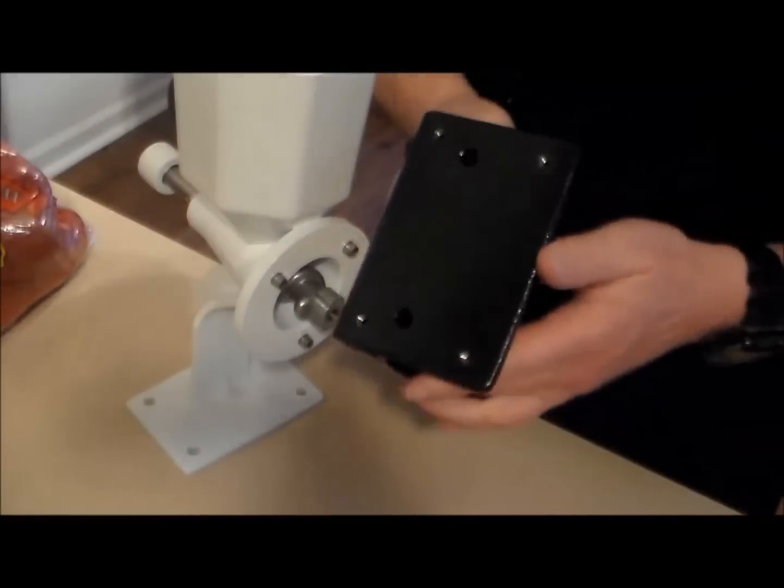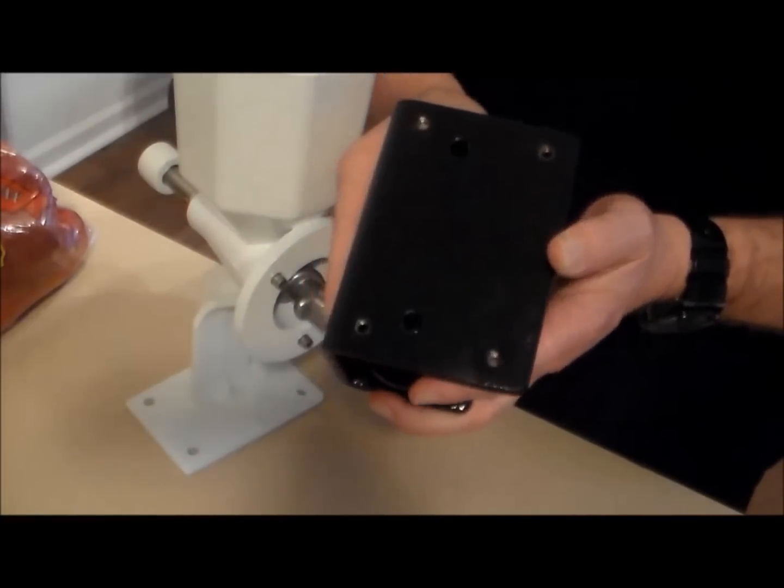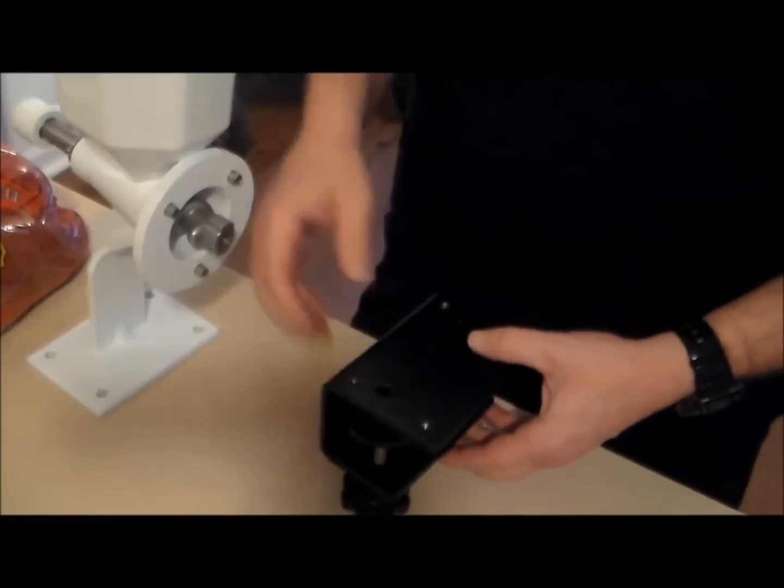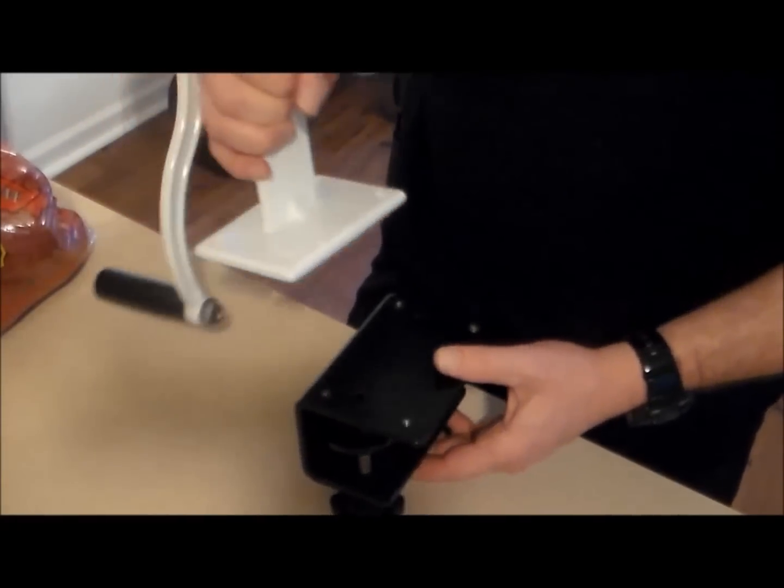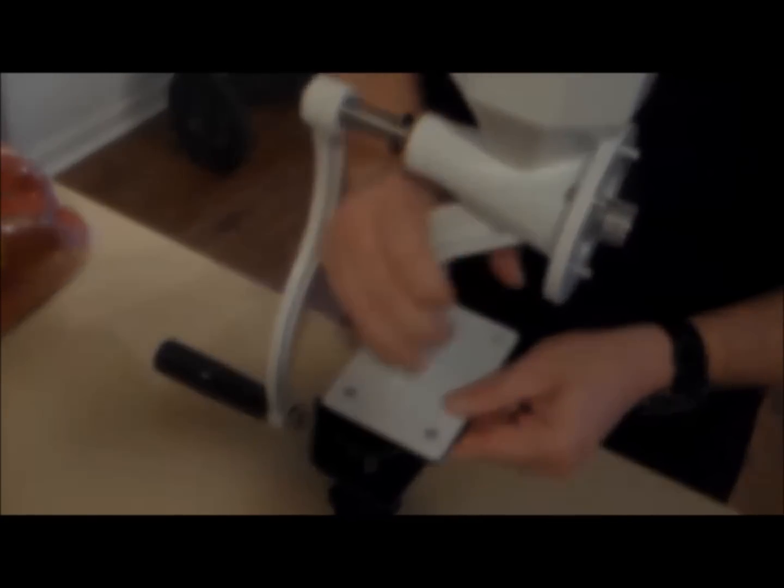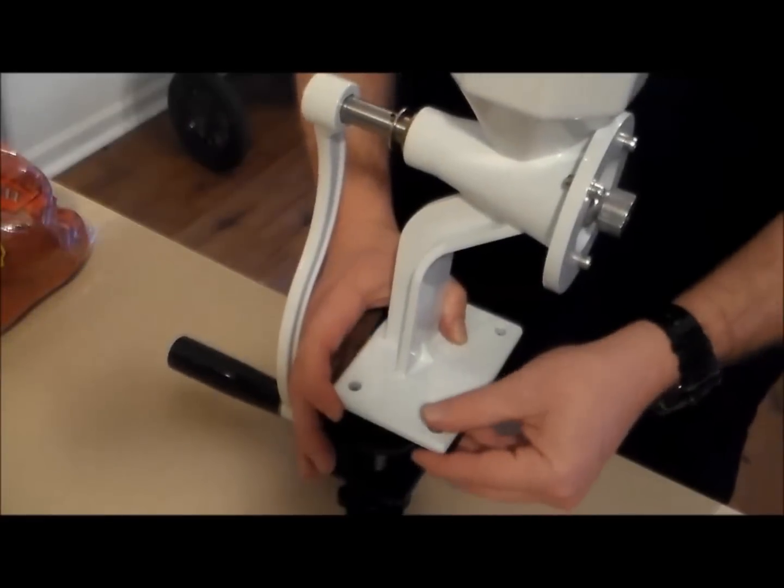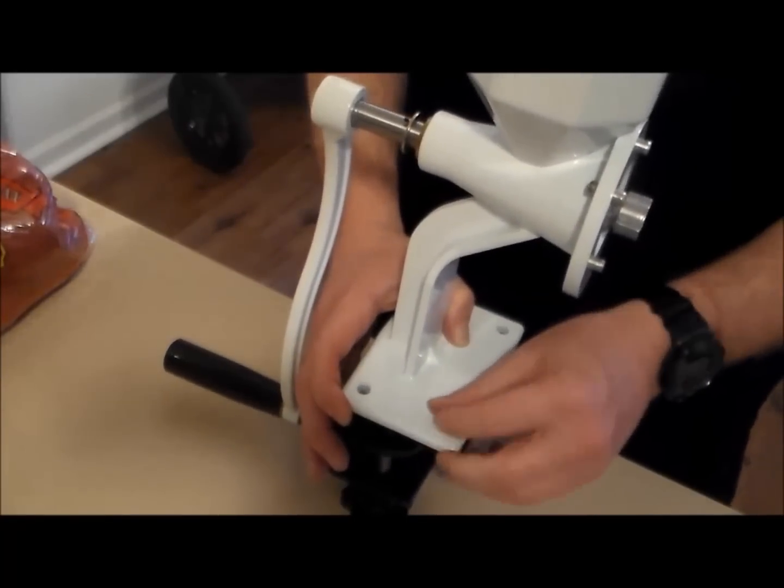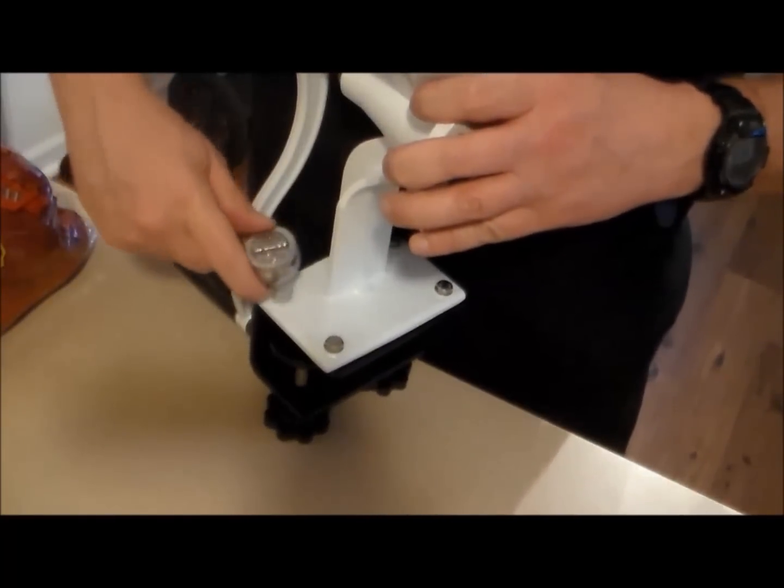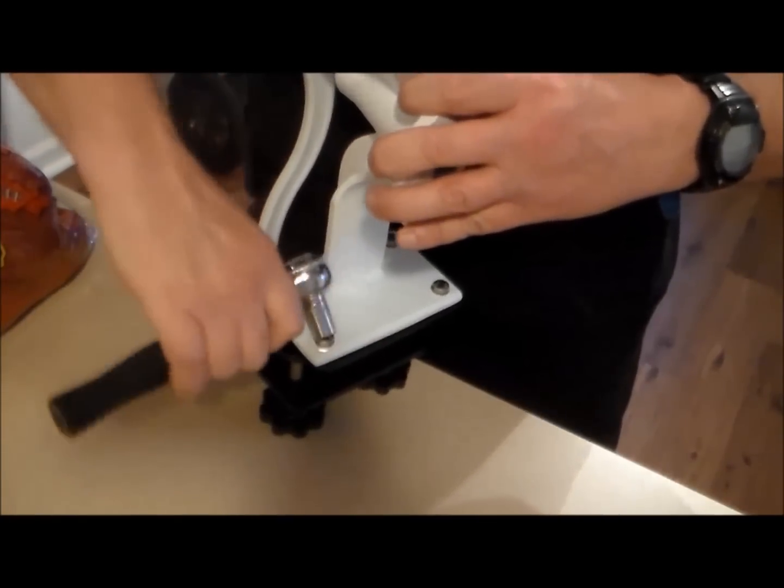Here we're going to attach the countertop clamp. You see the four holes there that we're going to bolt the Wonder Mill Jr. Deluxe to the countertop clamp. So you simply line it up. Once you get the four bolt holes lined up together, you're just simply going to insert your bolts. Once you get all four of the bolts inserted in, now you're just going to tighten them down really good. You want to get them good and tight. That way it doesn't come apart on you while you're using it.